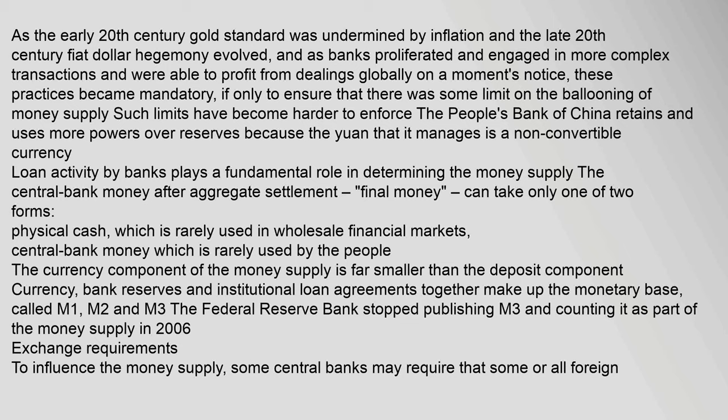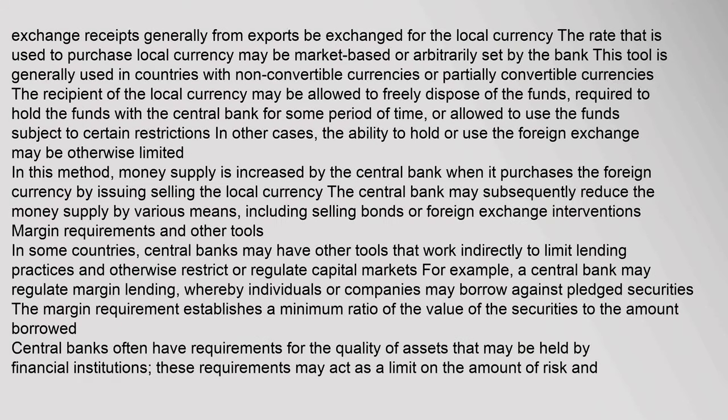To influence the money supply, some central banks may require that some or all foreign exchange receipts — generally from exports — be exchanged for the local currency. The rate used to purchase local currency may be market-based or arbitrarily set by the bank. This tool is generally used in countries with non-convertible or partially convertible currencies. In this method, the money supply is increased by the central bank when it purchases the foreign currency by issuing the local currency. The central bank may subsequently reduce the money supply by various means, including selling bonds or foreign exchange interventions.